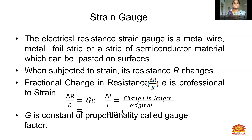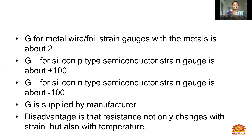Next is the strain gauge. What is meant by strain gauge? The electrical resistance strain gauge is a metal wire, metal foil strip, or a strip of semiconductor material which can be bonded onto a surface. When subjected to strain, its resistance R changes. The fractional change in resistance delta-R divided by R is proportional to strain, expressed as delta-R by R equals G times epsilon, where epsilon is delta-L divided by L — change in length divided by original length. G is a constant of proportionality called the gauge factor. G for metal wire or foil strain gauges is about 2; G for silicon P-type semiconductor strain gauges is about plus 100; G for silicon N-type semiconductor is about minus 100. G is supplied by the manufacturer.